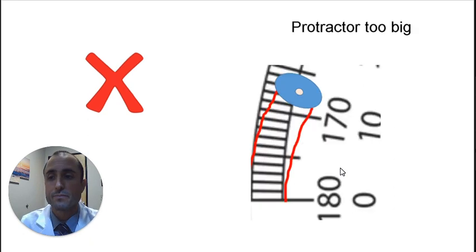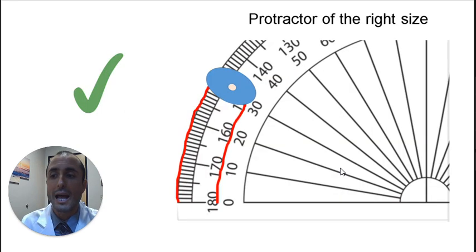That protractor is too big for that arc, and this protractor is the right size to measure that arc.